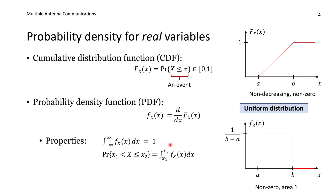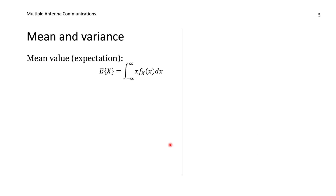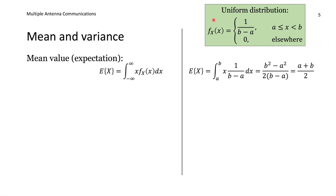A distribution is fully characterized by the PDF, but often we summarize it with single numbers. The mean value, also known as expectation, represents the average we would get over many realizations: mathematically, we multiply the PDF by x and integrate from minus infinity to infinity. For the uniform distribution, this gives (a + b) / 2 — naturally the center of the interval. The quadratic mean, or power, is the expected value of x squared: we multiply the PDF by x squared and integrate.